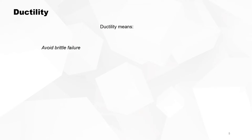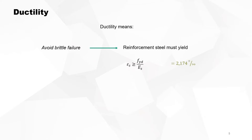Ductility means avoiding brittle failure, and that requires that the reinforcement steel must yield. It means that the strain must be bigger than the design value of the stress in the steel divided by its modulus of elasticity. For BE500 this means 2.17 per mil. So if the strain is bigger than 2.17 per mil, the steel is yielding and you can avoid brittle failure because you will be warned when a collapse is imminent.